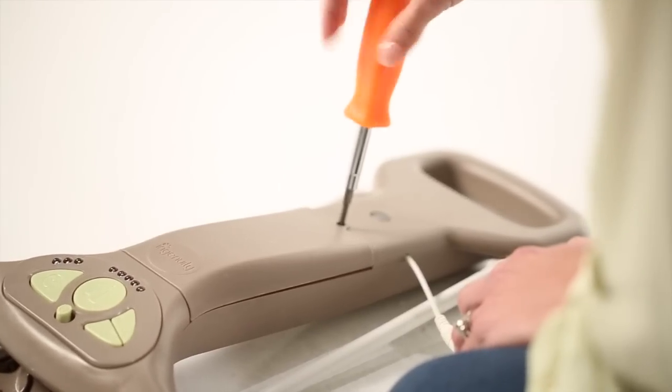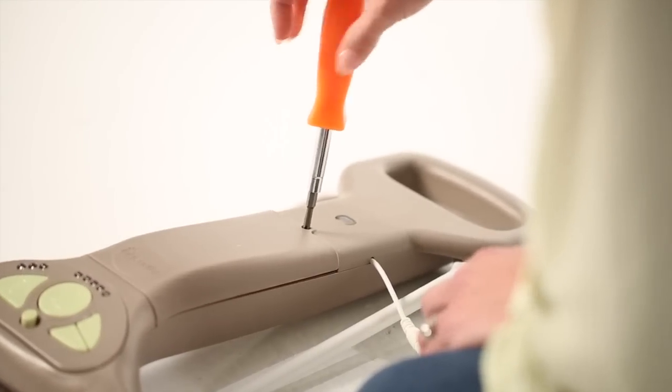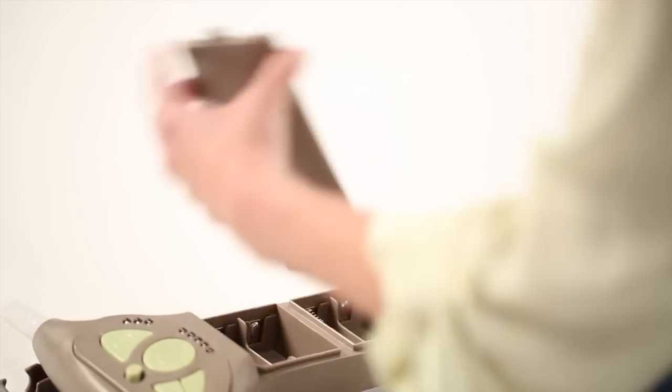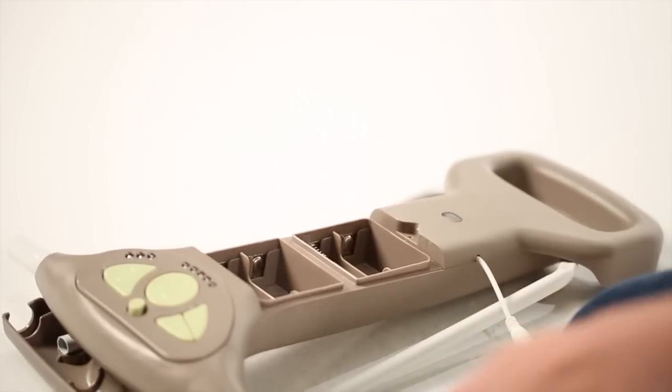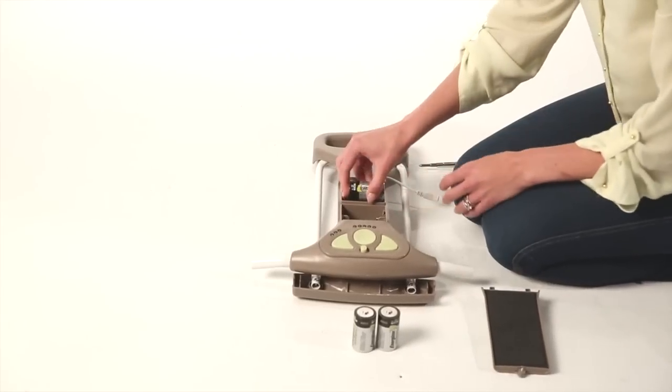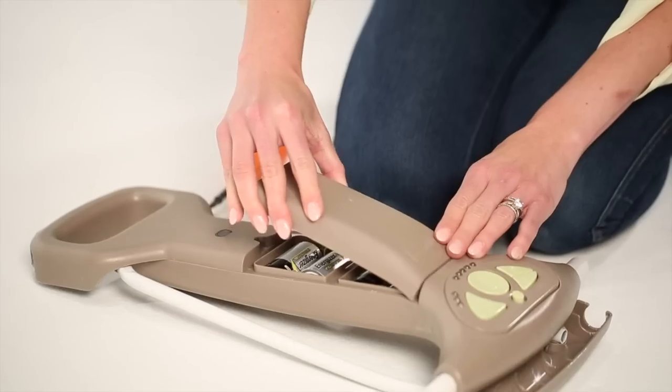This is how to install the batteries. Locate the control panel and remove the cover using a Phillips-head screwdriver. Insert 4 D batteries into the control panel and then replace the lid with the help of the screwdriver.